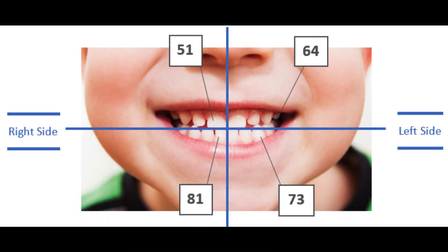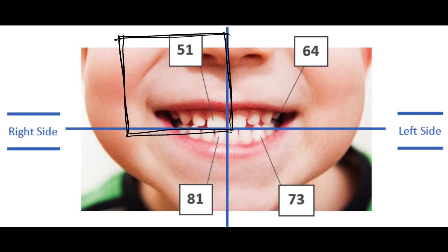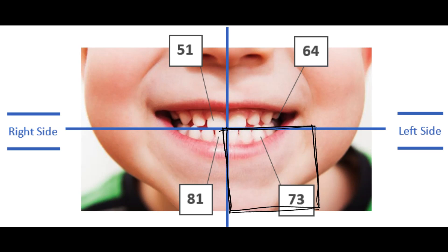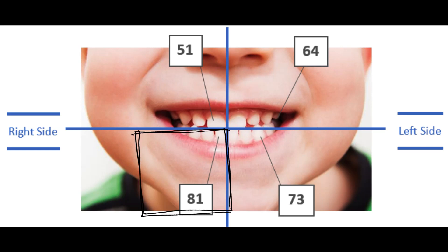For children, the mouth is divided into quadrants numbered five to eight. The maxillary right quadrant is quadrant number five, the maxillary left quadrant is quadrant number six, the mandibular left quadrant is quadrant number seven, and the mandibular right quadrant is quadrant number eight.